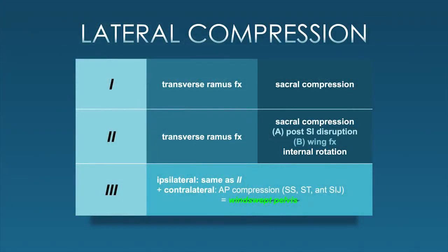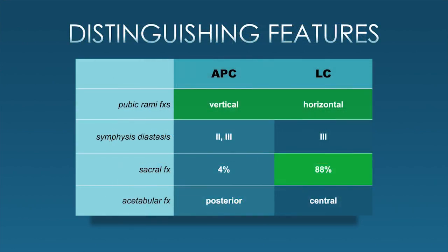In review of lateral compression injuries: transverse pubic rami fractures are seen in all types; sacral compression is seen posteriorly; LC type 2a disrupts posterior SI joint ligaments while type 2b fractures the iliac wing; and internal rotation is present. When we move across to the contralateral side and create an anterior-posterior compression, we have an LC type 3 windswept pelvis. Distinguishing features: look at the orientation of the rami fractures; sacral fractures are what really separate lateral compression from anterior-posterior compression injuries; also look for posterior acetabular wall fractures and posterior hip displacements with APC injuries.